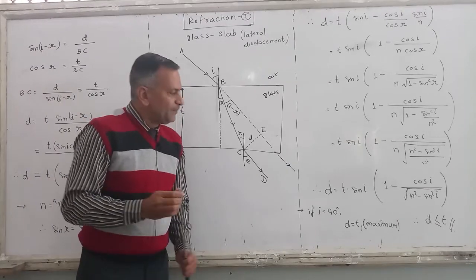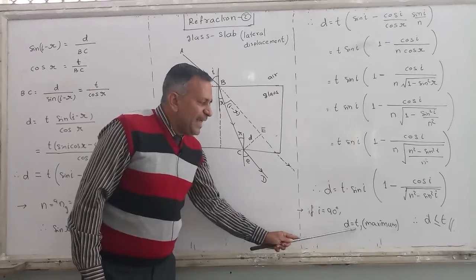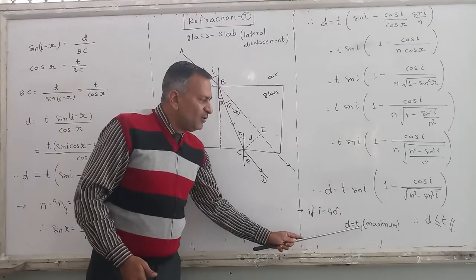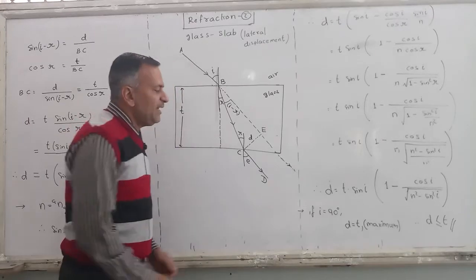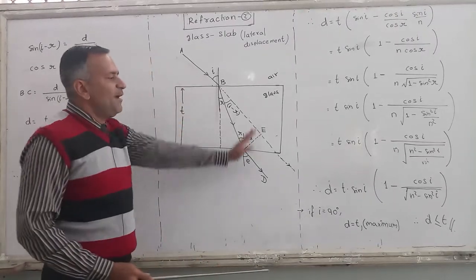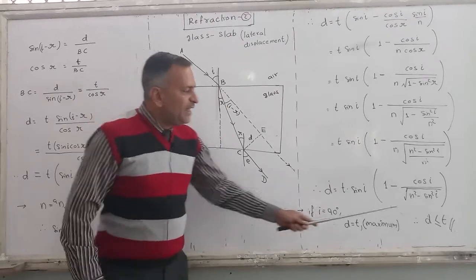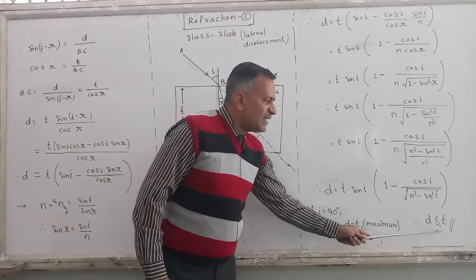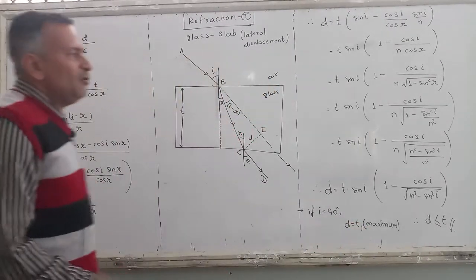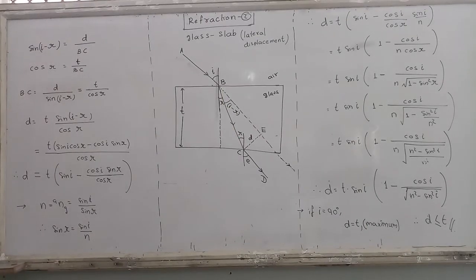If you want that D should exceed T, that the value of D becomes more than thickness of glass slab, then you would need angle greater than 90, which is not possible here. So whatever is the value of lateral displacement, it is always less than or equal to the thickness of glass slab. Although the derivation is long, it is really important. So I suggest all of you to practice and learn this.